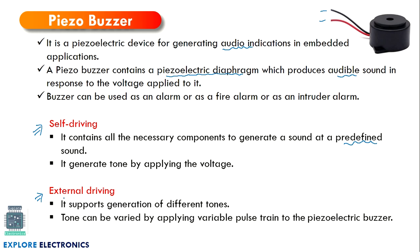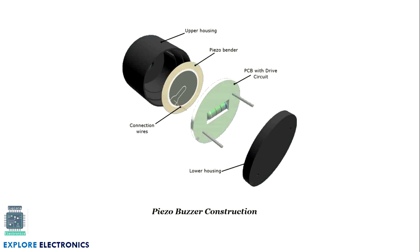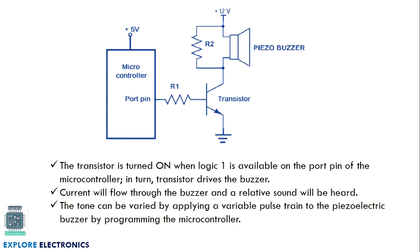With external driving, we can expect different kinds of tones when we apply a variable pulse train of input from the microcontroller. This is the physical structure of the buzzer. Here also we have connected the buzzer with a transistor. To turn on the transistor we need to provide the port pin with the value 1. When the port pin is 1, the transistor will be on, making the circuit complete so the other end connects to ground through the transistor. When the transistor is on, the buzzer will be on; when the transistor is off, the buzzer will be off.